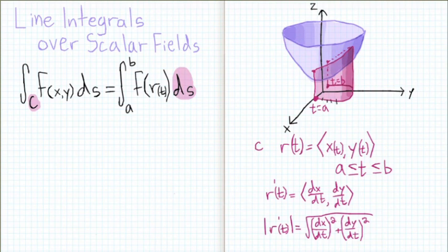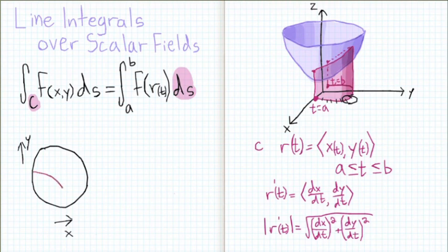Now remember, ds is a very small part of our curve. Let's zoom up on a part of this curve and see what we can figure out about ds. We'll view it directly from above. So y will be going up and x will be going to the right. And my curve will look something like this. This small portion of the curve is ds. And it's so small that we can think of it as a straight line segment.